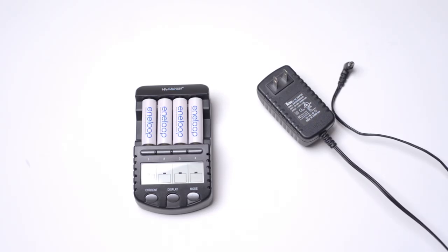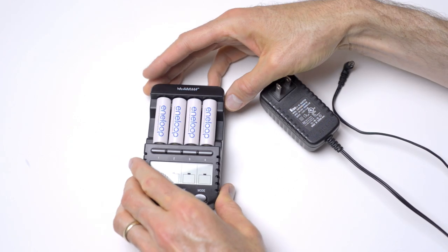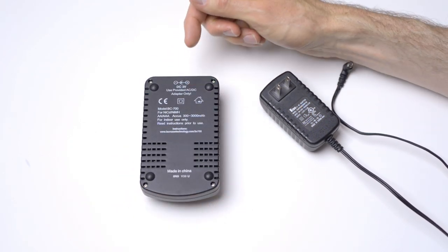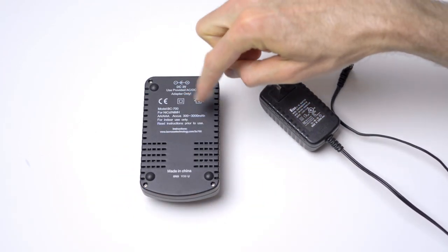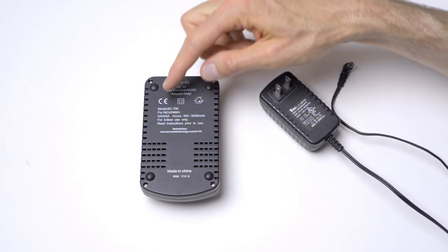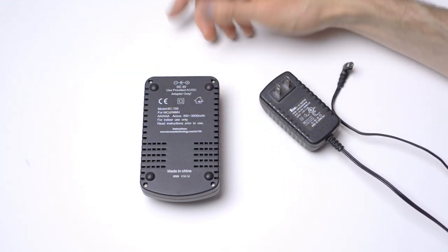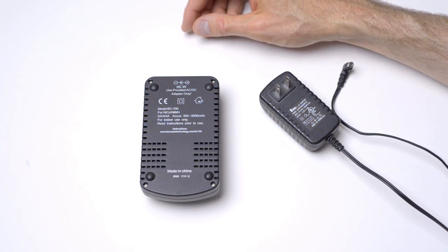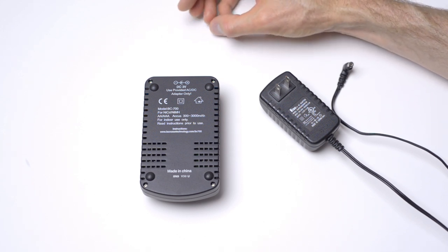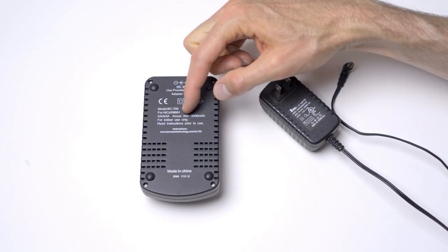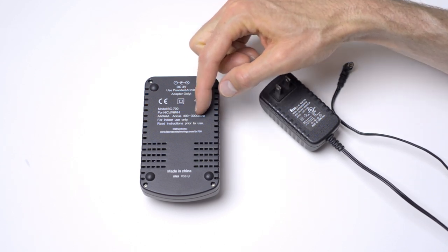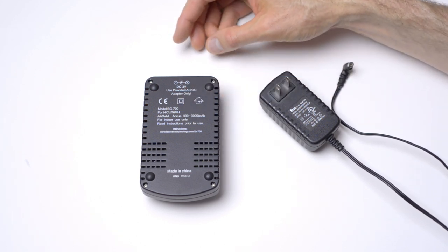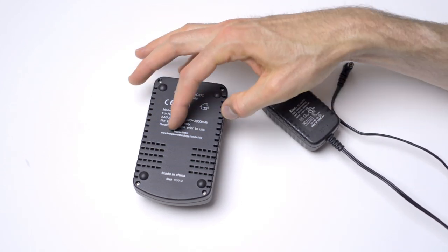Here we have our LaCrosse Technology BC700 battery charger. As you can see here, I've got four AA's in it. On the back, it notes a couple of things. Model number, it's four nickel cadmium or nickel metal hydride. Most rechargeable batteries these days are nickel metal hydride, much better battery technology. This is also capable of charging AA's or AAA's, and it can do batteries that are rated from 300 to 3,000 milliamp hours.